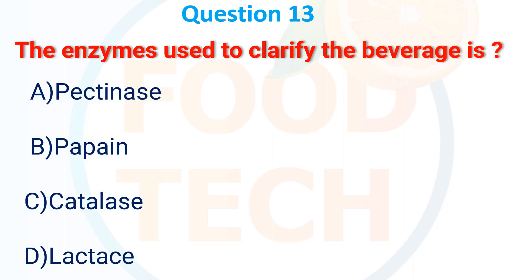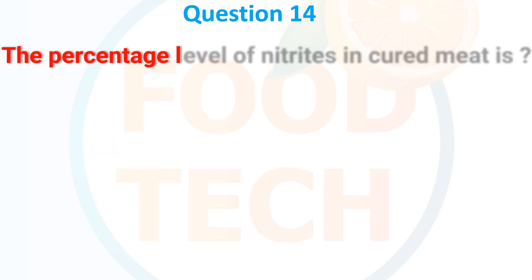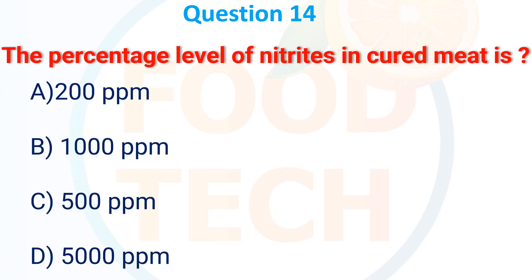The enzymes used to clarify beverages: A. Pectinase, B. Protease, C. Amylase, D. Lactase. The answer is A. Pectinase.